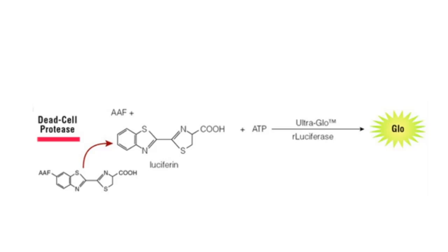Other assays take advantage of the fact that when cells die, there's a loss of membrane integrity, which allows chemicals or proteins to freely enter or exit the cell. Similar to trypan blue allowing dye in when the cell is dead, proteases can also exit the cell. So when a cell dies and loses membrane integrity, dead cell proteases are released, and by using a substrate that is either luminogenic or fluorogenic, you can measure the dead cell protease activity.